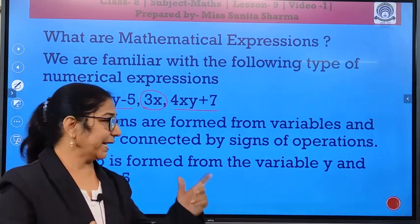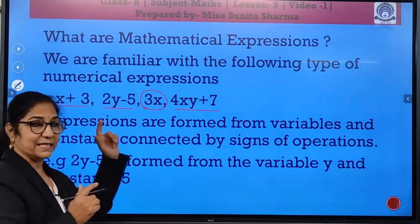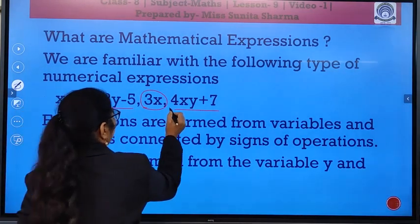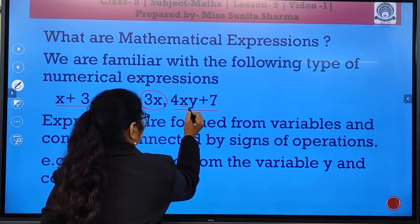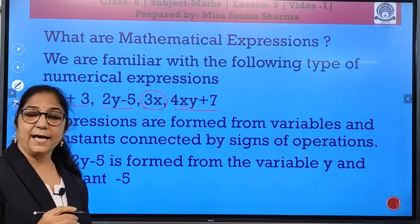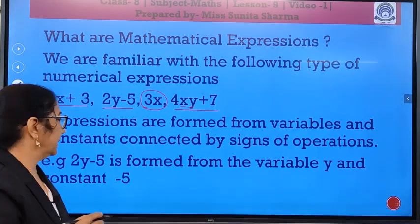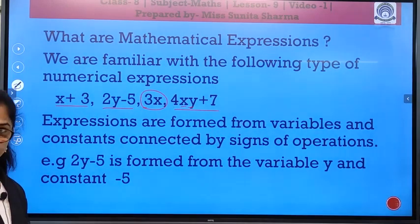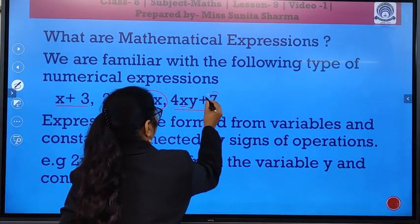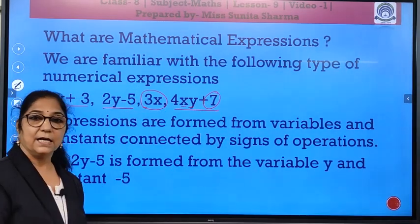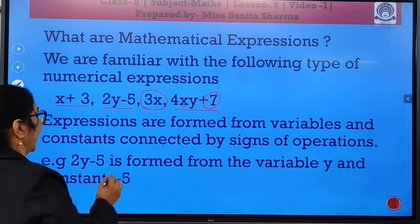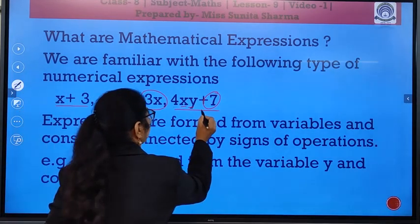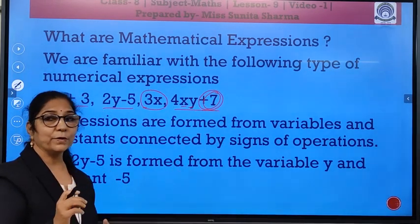Now, what are variables we should know? For example, you see here, it is x plus 3. So, x is a variable. Same way in this expression, you see 4xy. So, x and y, they are variables. Expressions are formed from variables and constants. Constants means here you see plus 7. It is a constant and it is connected by signs of operations along with the sign.